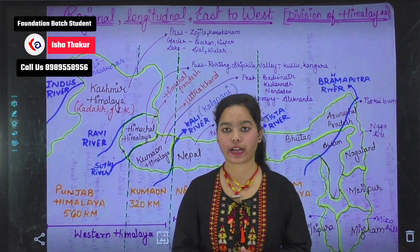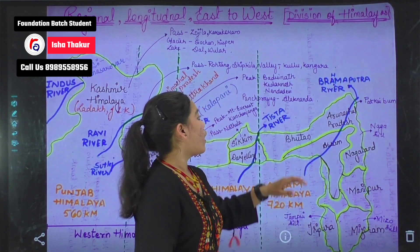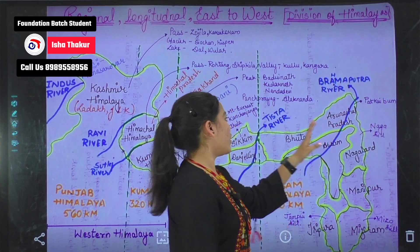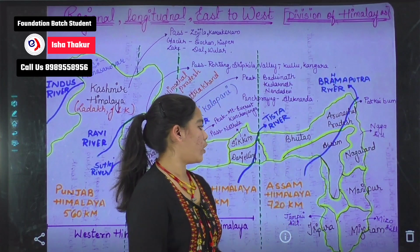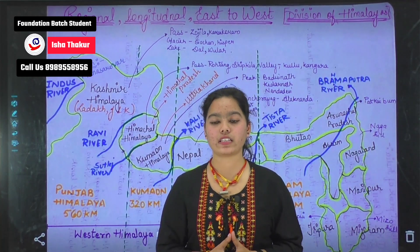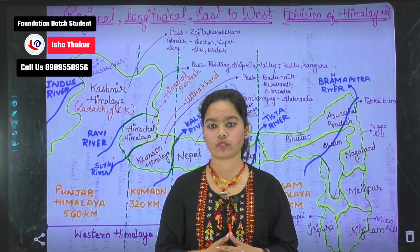Arunachal Pradesh has Patkai Bum. There are also the Brahmaputra River and Tista River in this region. With this, the division of Himalayas ends here. Thank you.